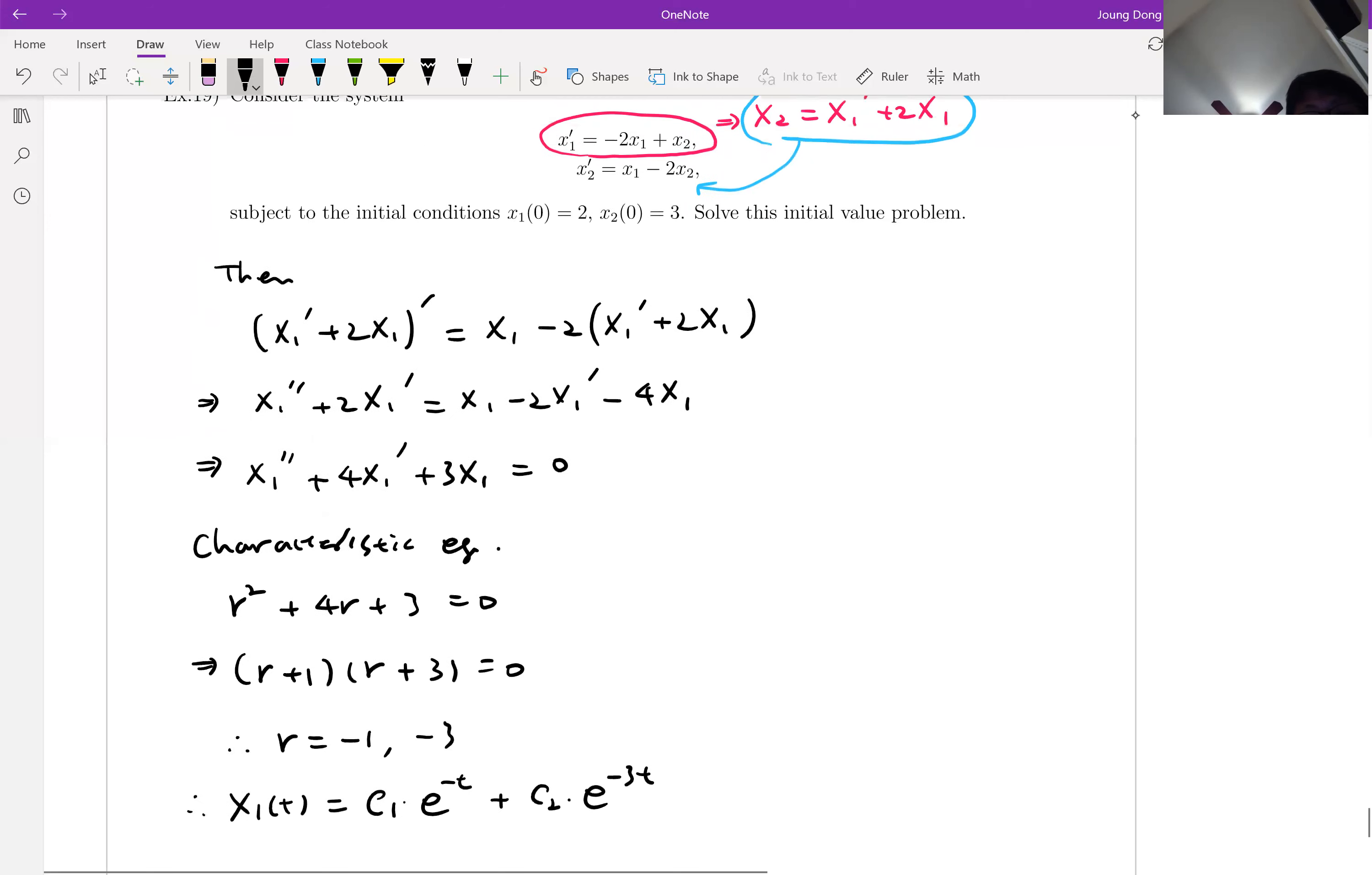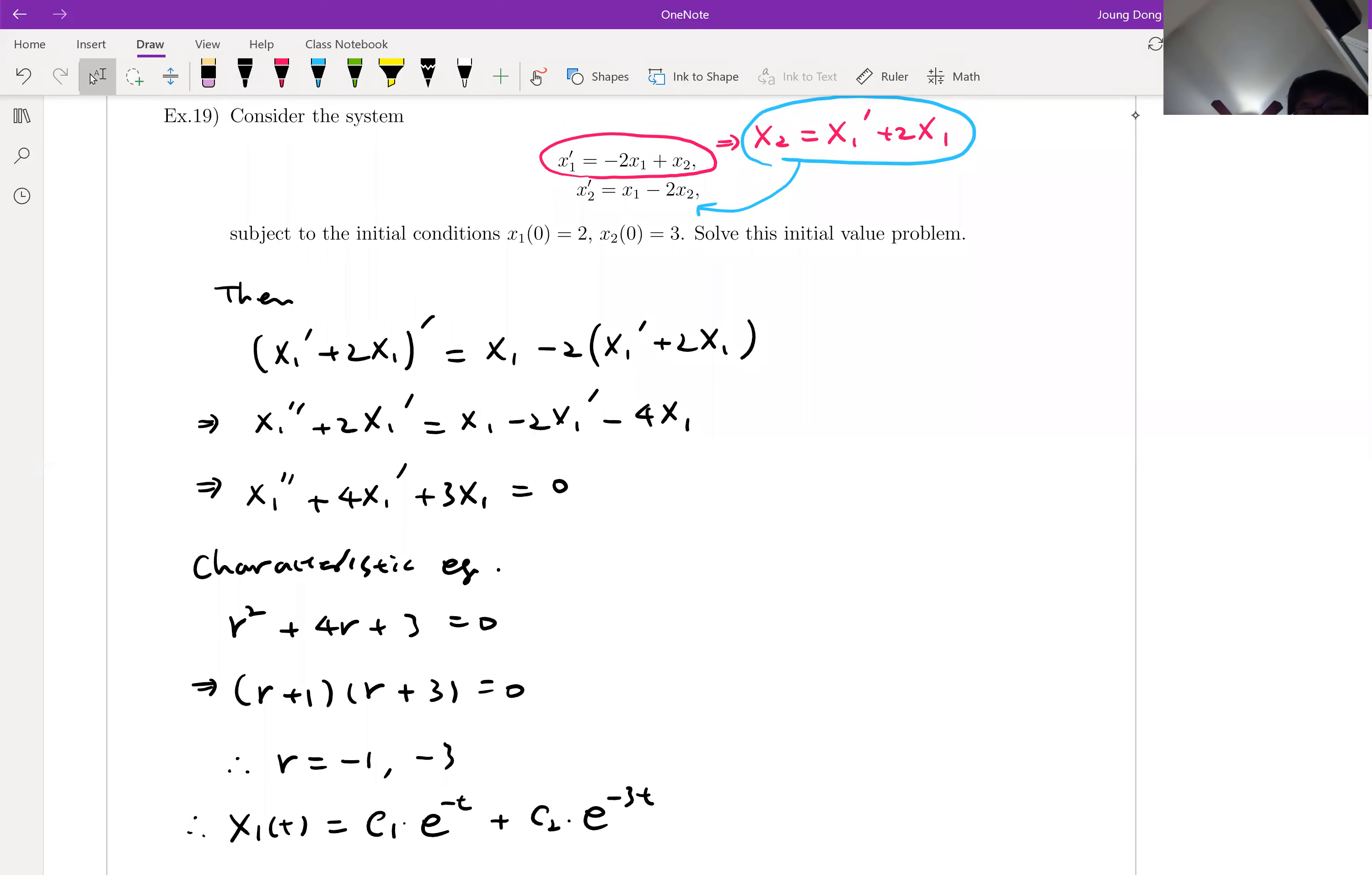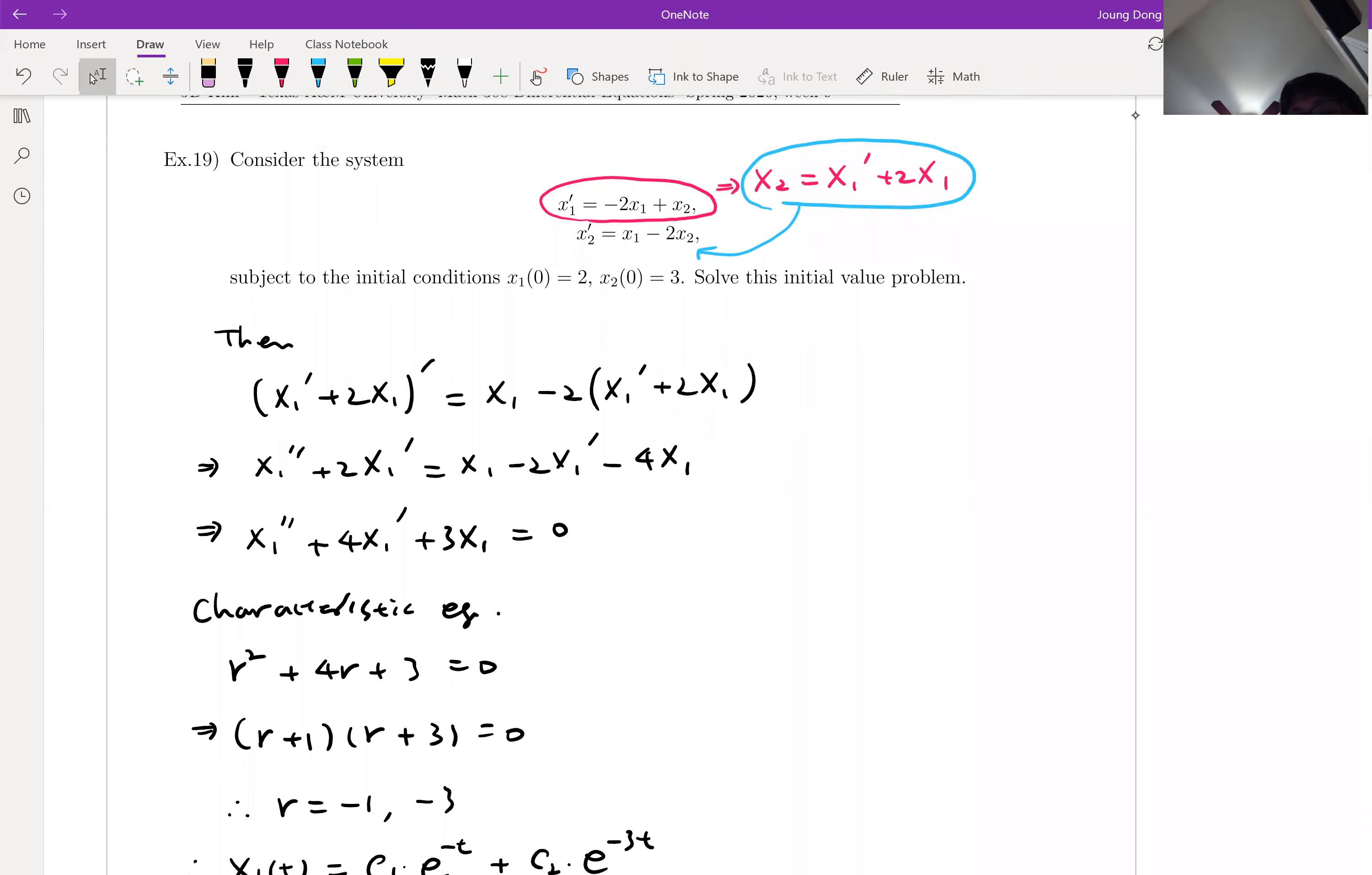So like, you know, but look at that. This is system. Now, only x1 first, we have to find x2. But we know the form of x2 already. Look at the blue circle. x2 is defined by x1 prime plus 2x1. Here we go.